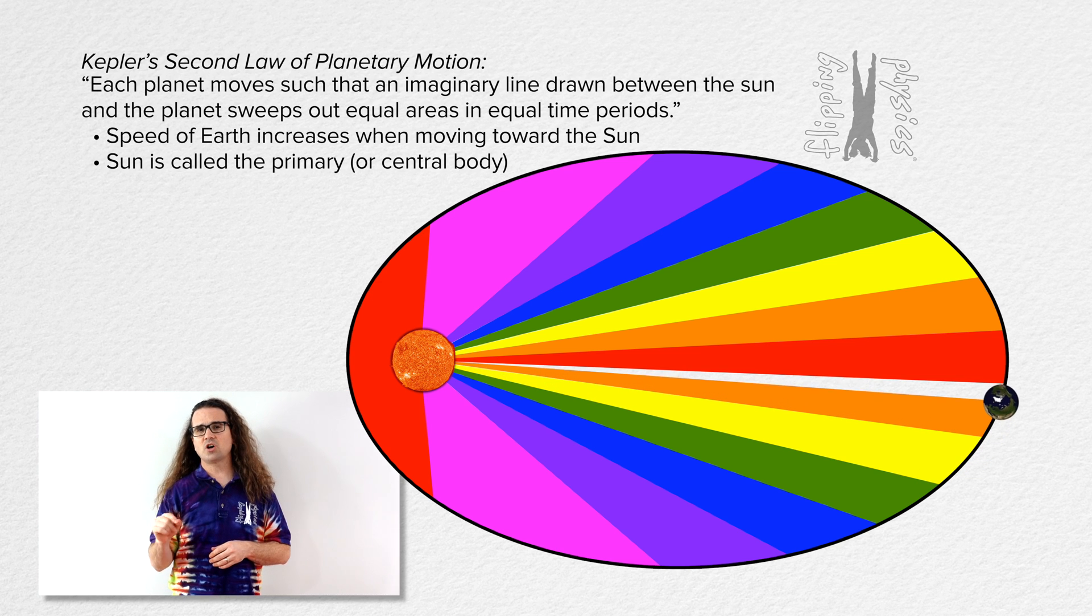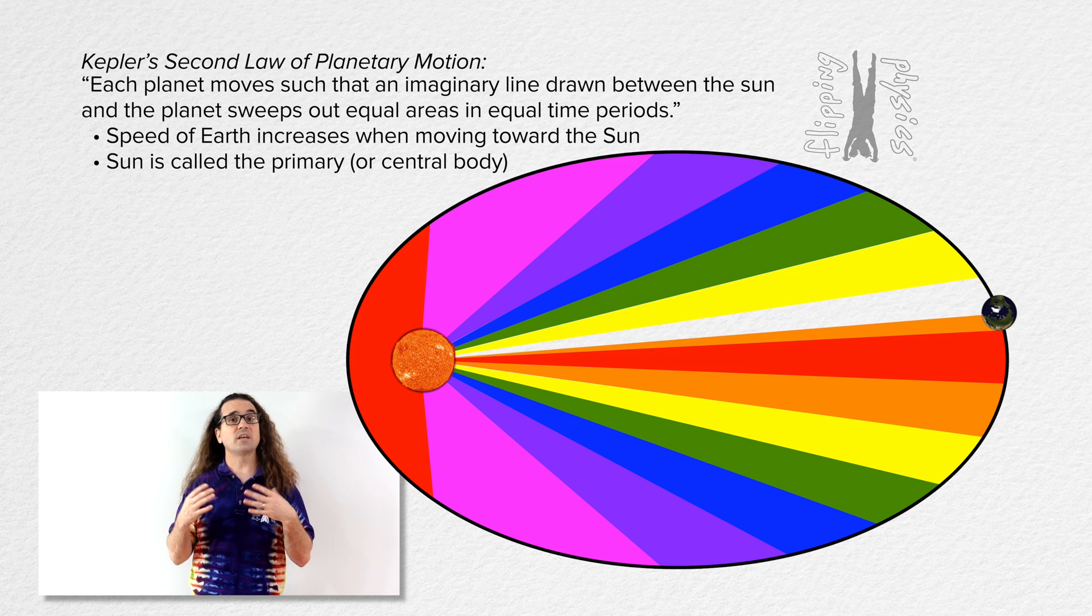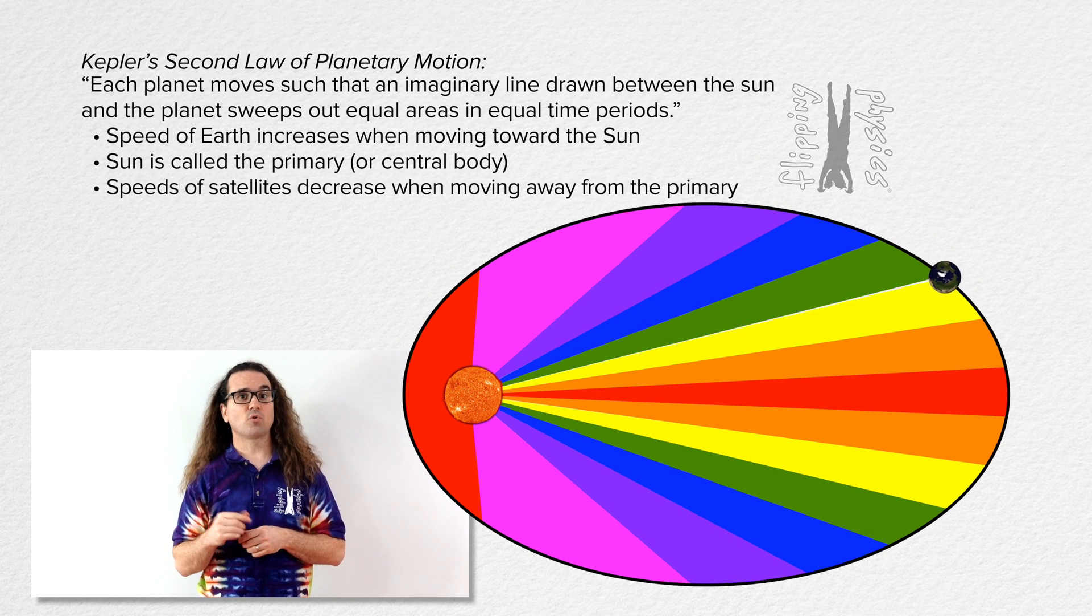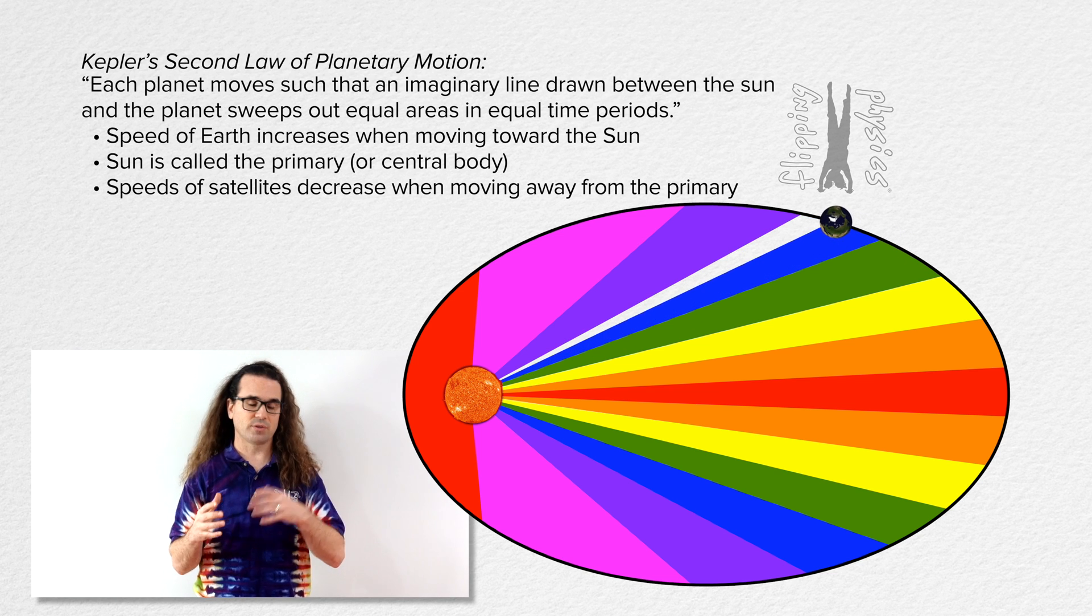Just so you know, the sun is called the primary in the solar system. It's also sometimes called the central body in the solar system. Realize the speed of the Earth or the satellite decreases as it moves farther from the primary or the central body.